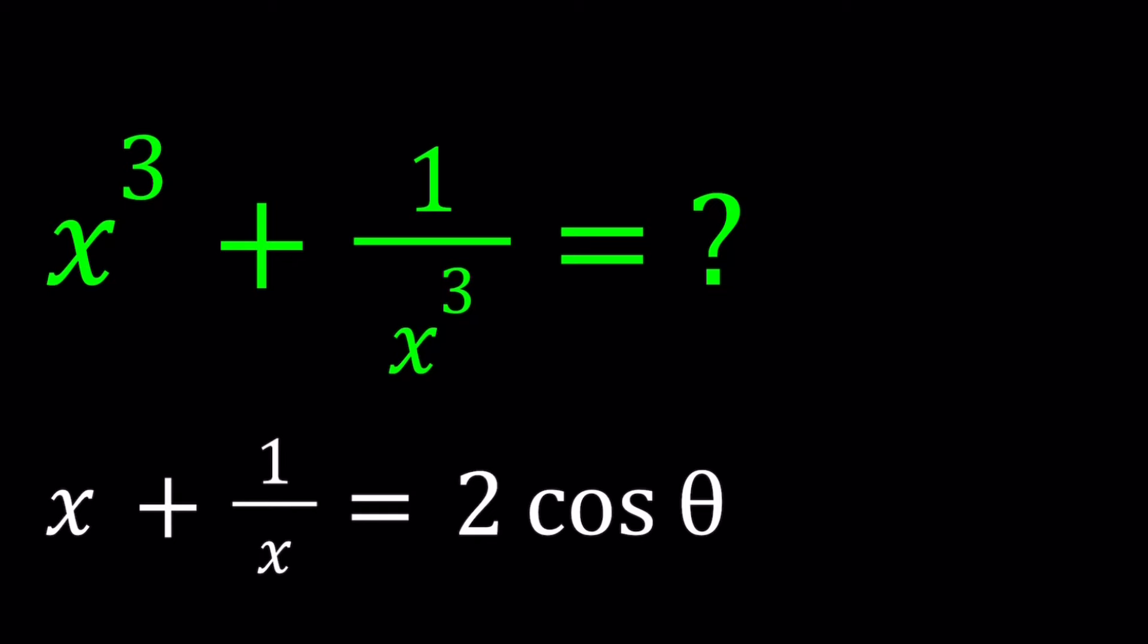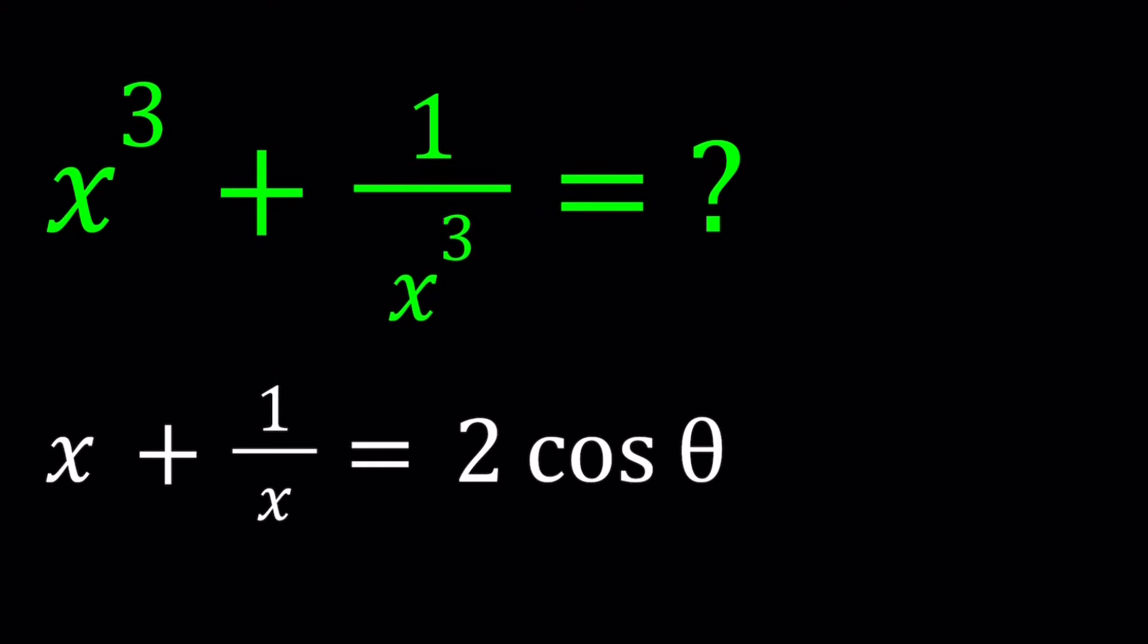So we're given that x plus 1 over x is equal to 2 times cosine theta. And we're supposed to evaluate x cubed plus 1 over x cubed. Sorry, it's kind of backwards. I asked the question first because...